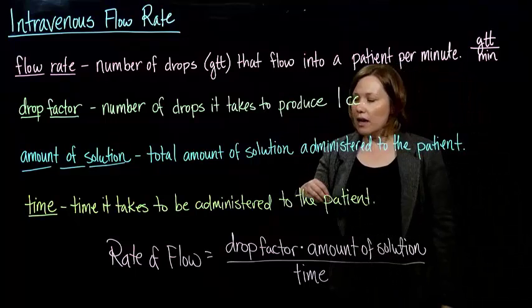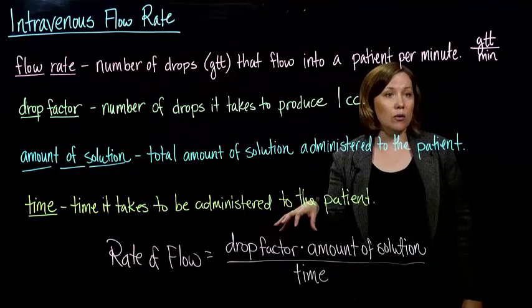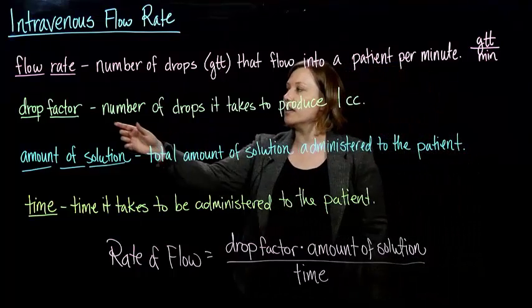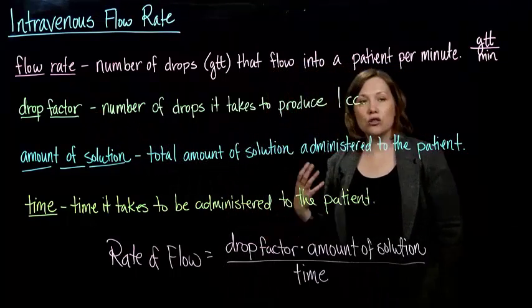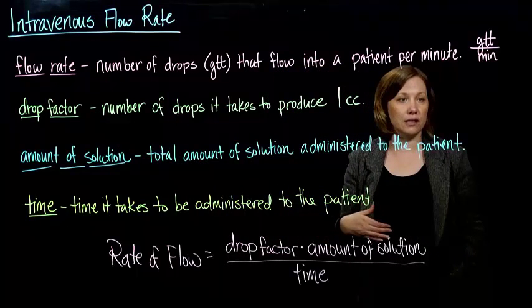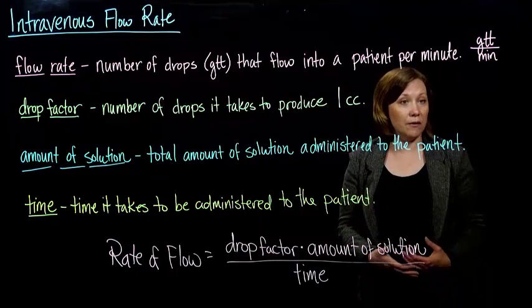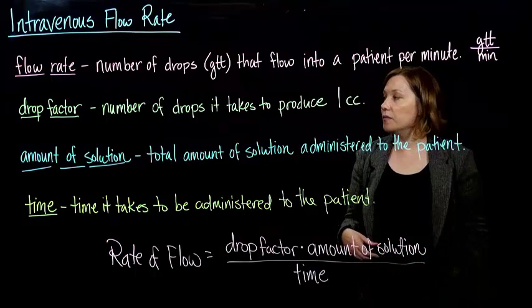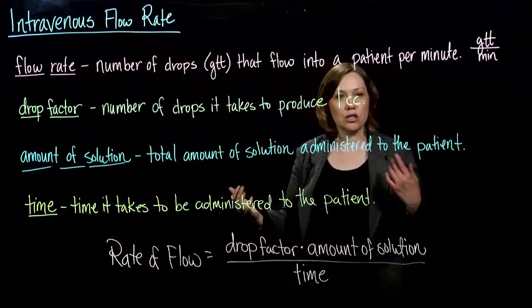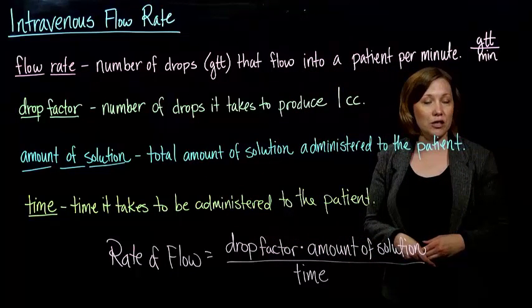We need to know a little bit of terminology to work with and calculate these flow rates. One you might hear is drop factor. The drop factor is just the number of drops it takes to produce one cc. That could be different for each different solution, depending on how big the drops are. The amount of solution is just like what it sounds like — the total amount of solution that's going to be administered to the patient.